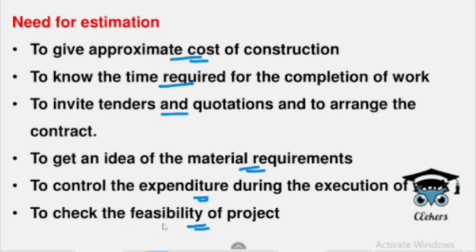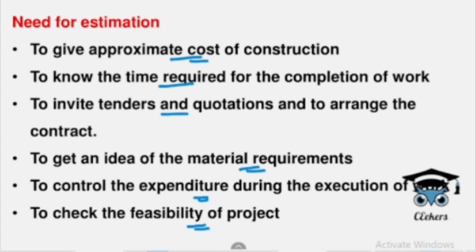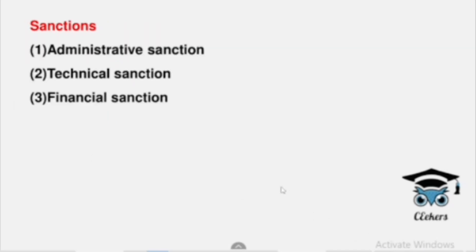We need to check the feasibility of the project — feasibility means possibility. If that project is possible, you will need to decide your estimate. Next, you will need data for estimation: drawings, specifications, and rights. You will also need to prepare sanctions before execution.